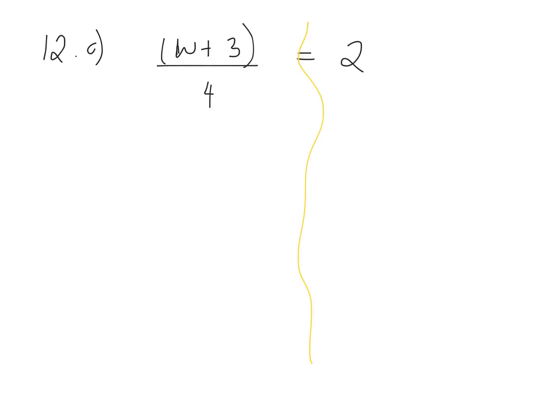When we have a fraction, we read this as w plus 3 divided by 4, right? What's the opposite of dividing something by 4? If I multiply this whole thing by 4, I'm undoing the operation of divided by 4. Whatever we do to one side, we have to do to the other side. So what do I do to the right side? Multiply by 4.